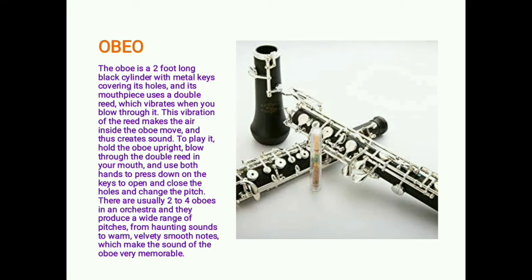The oboe is a two-foot-long black cylinder with metal keys covering its holes. Its mouthpiece uses a double reed which vibrates when you blow through it; this vibration makes the air inside the oboe move and creates sound. To play it, hold the oboe upright, blow through the double reed in your mouth, and use both hands to press down on the keys to open and close the holes and change the pitch. There are usually two to four oboes in an orchestra, and they produce a wide range of pitches from haunting sounds to warm, velvety smooth notes.